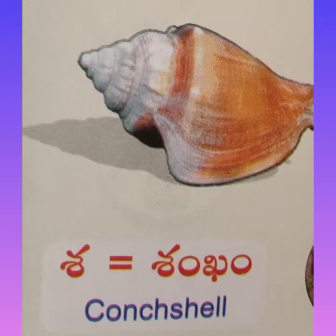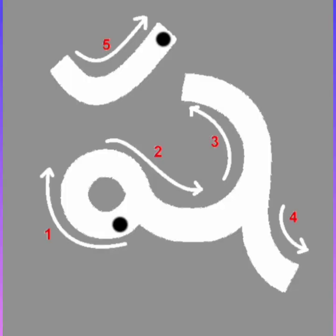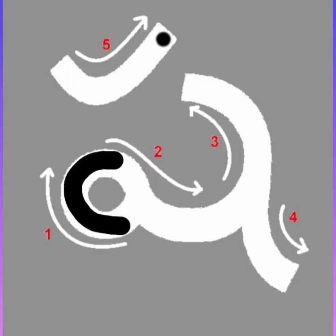Ya — yanta (machine); Ra — rampam (saw); La — latha (creeper); Va — vala (net); Shay — shangham (conch). Now today we are going to start the letter sha. This letter is sha.